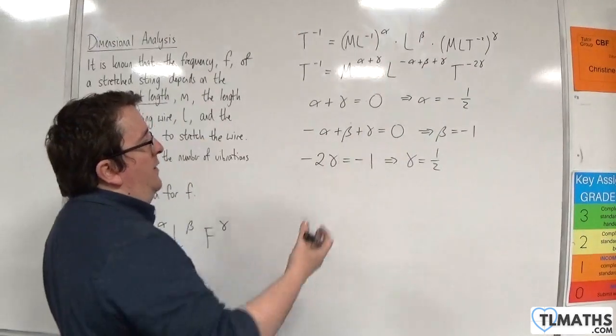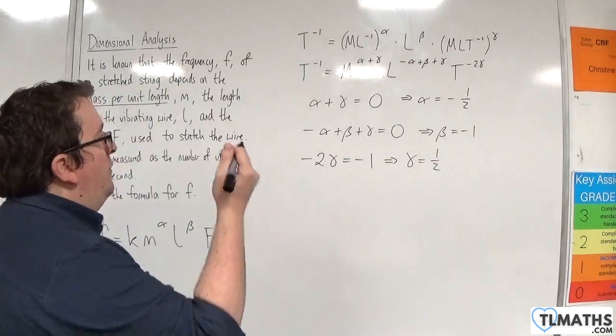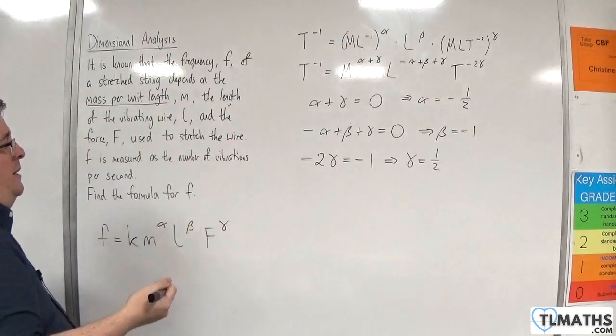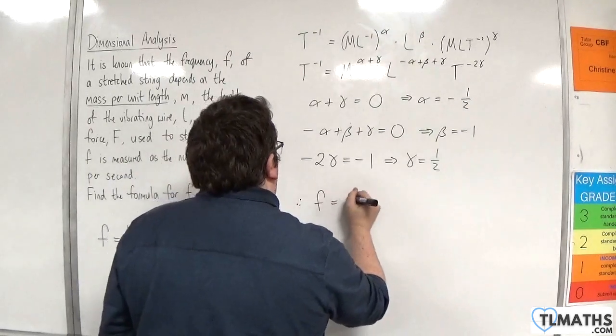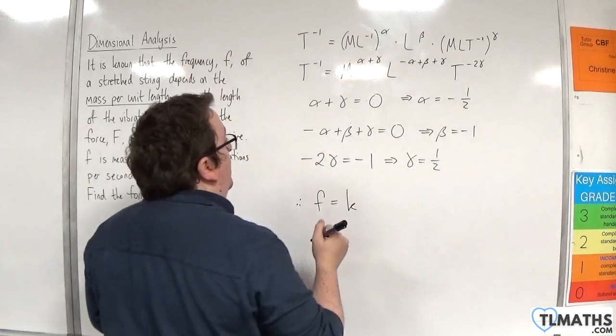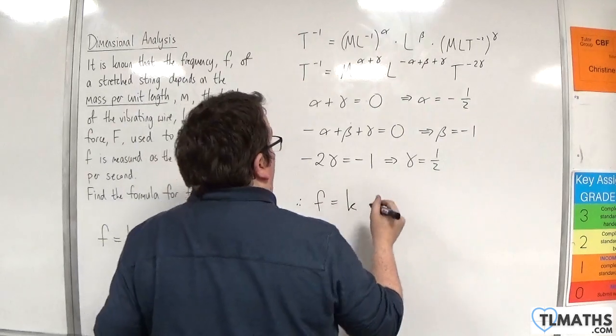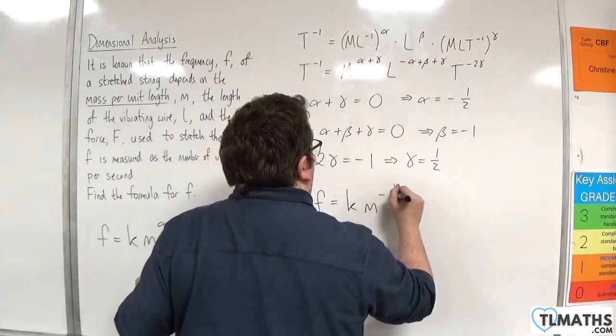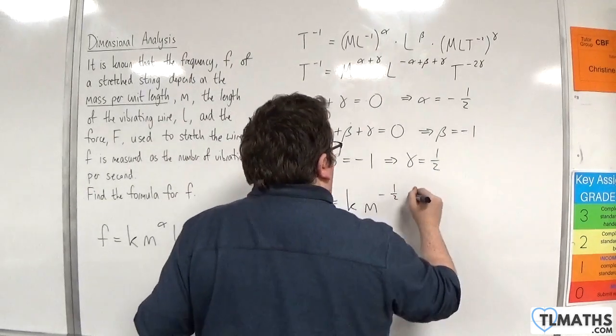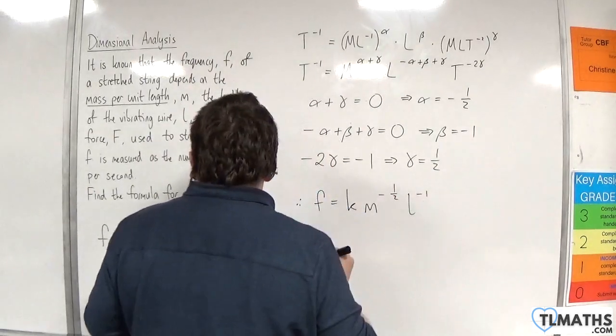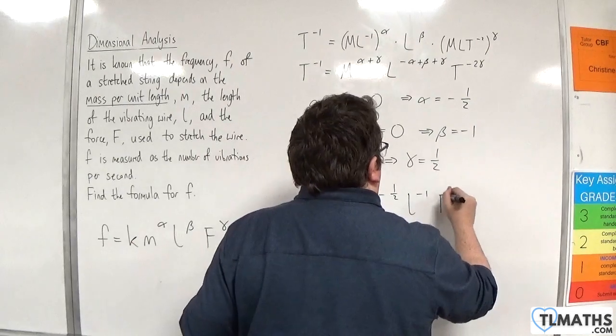But that one's relatively easy to do. So we've got the alpha, we've got the beta, we've got the gamma. So therefore, f is equal to k times m to the alpha, so m to the minus a half, then l to the minus one, then f to the gamma, so f to the half. So this is our formula.